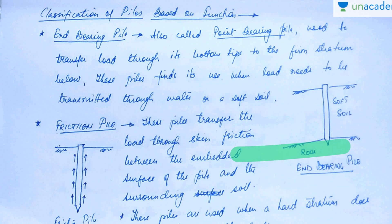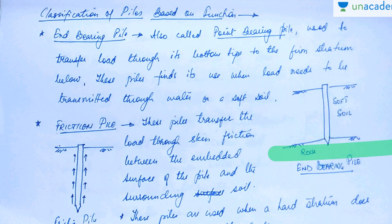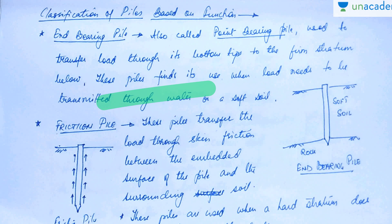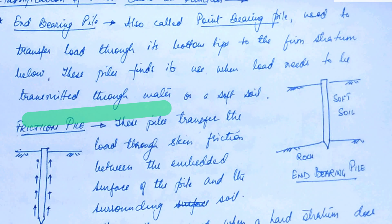Here you can see an end bearing pile. This is a hard stratum — rock is there at the bottom. Above this rock there is soft soil. Our foundation needs to go to a firm base where rock is there, and we can carry the load coming from the structure directly to it. These piles find use when load needs to be transmitted through water or soft soil.